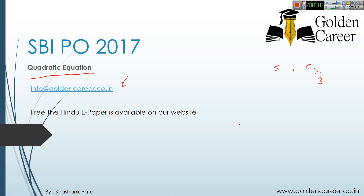For doubts related to your assignment, log in and ask the faculty. If you haven't joined the SBI batch yet, visit www.goldencareer.co.in — the registration link is on the home page. Registration fee is only 10 rupees; the coaching itself is free. Also, the Hindu e-newspaper is available on our website. Please download and read it daily, as it will help with vocabulary, essay writing, the English section, GD, and written exams.